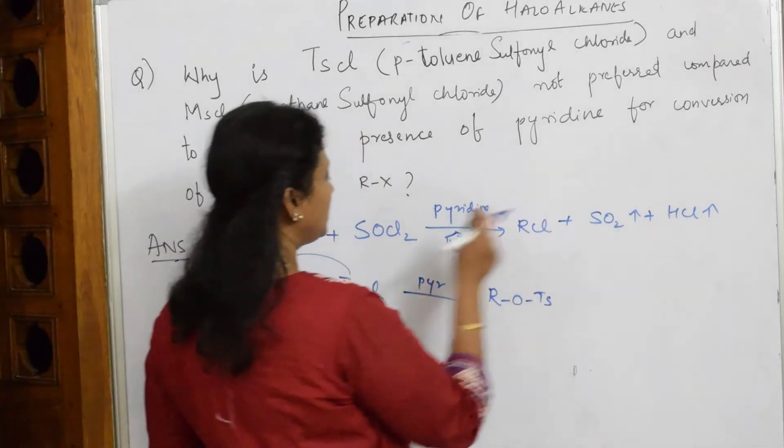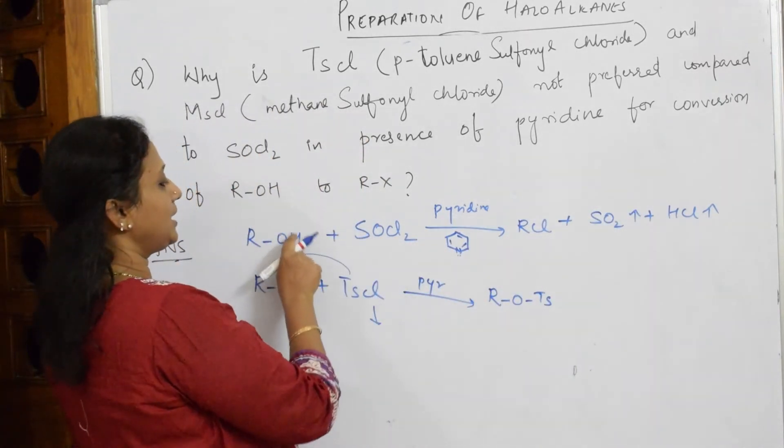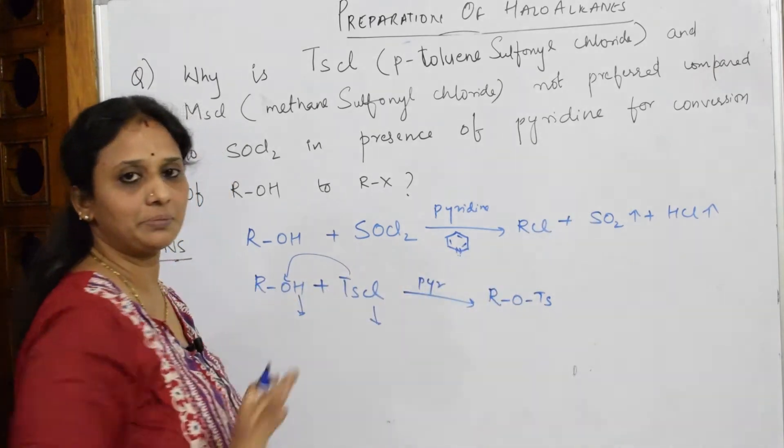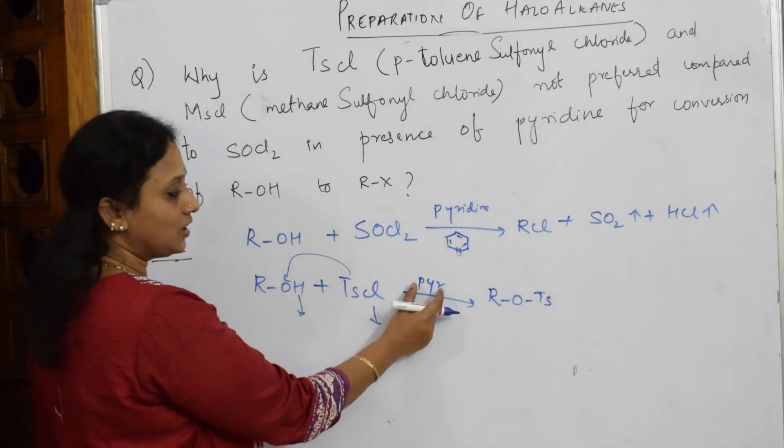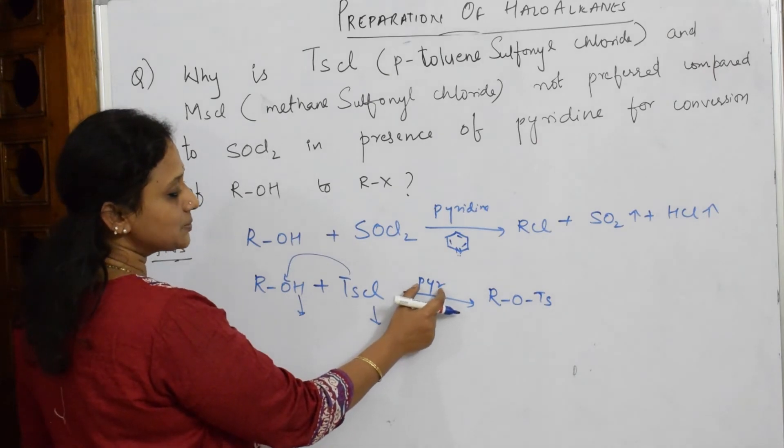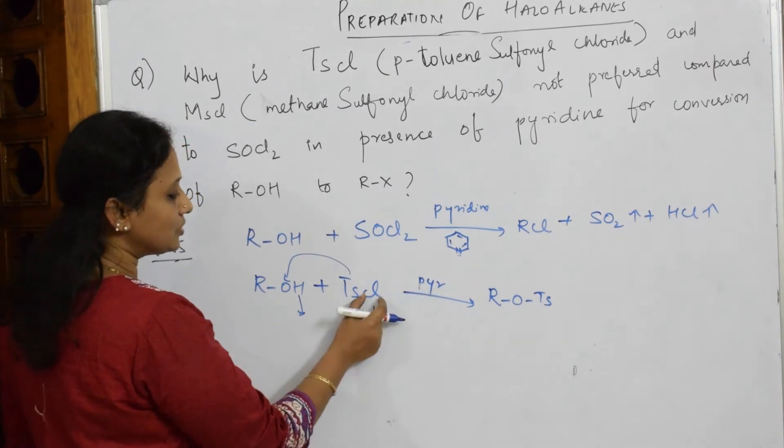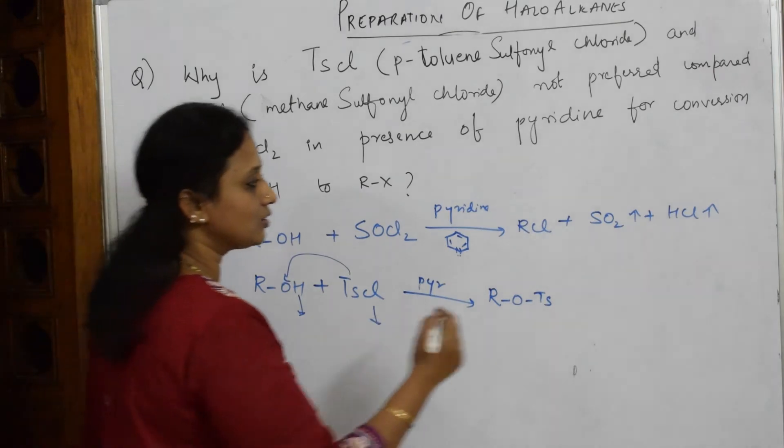Now, directly what did I do here? SO2 and HCl done and RCl I prepared. But here what happens is in the presence of pyridine, this pyridine is going to neutralize this HCl. How does it look?